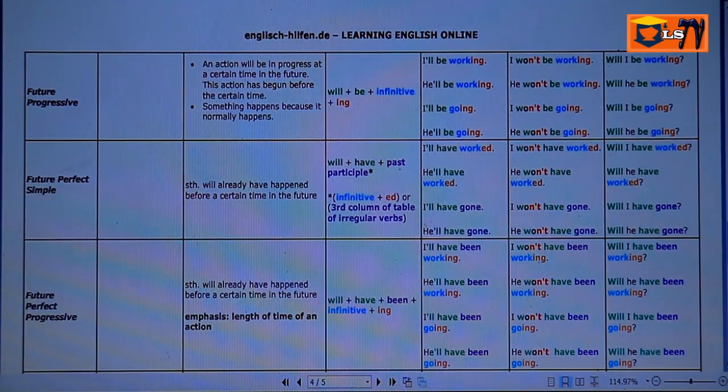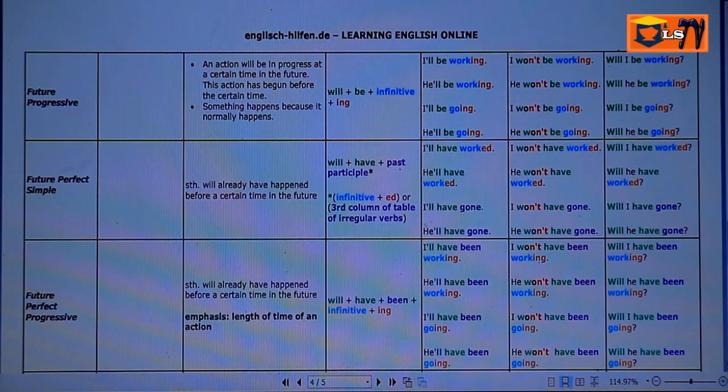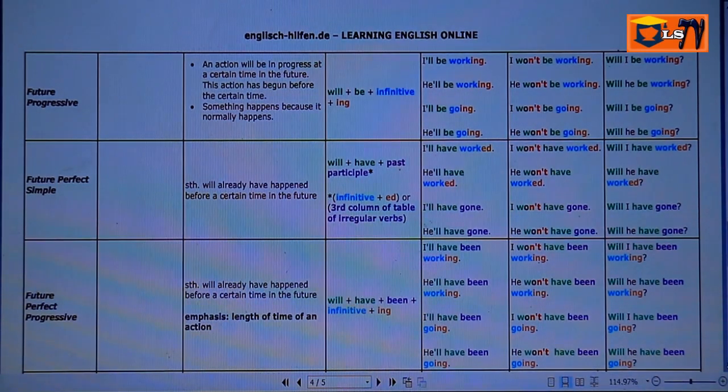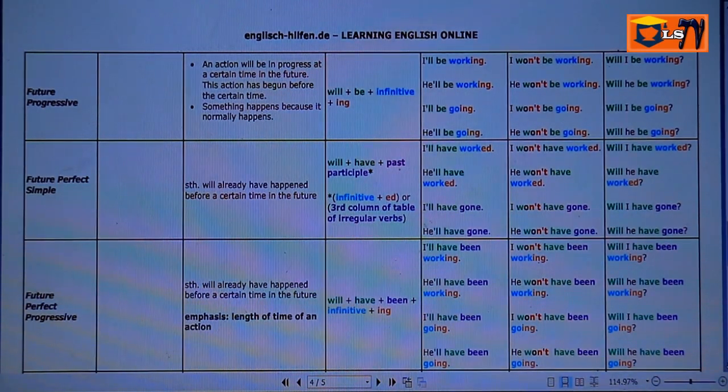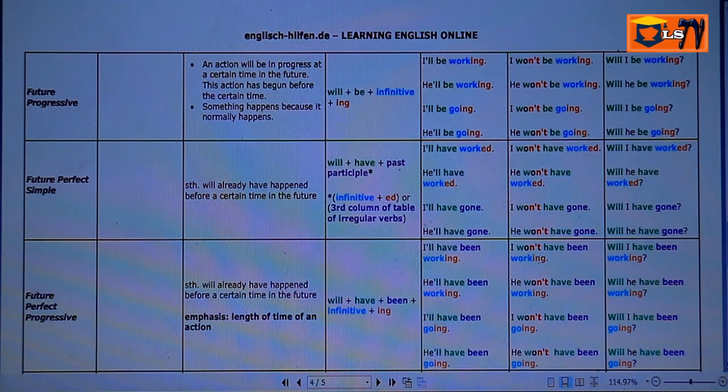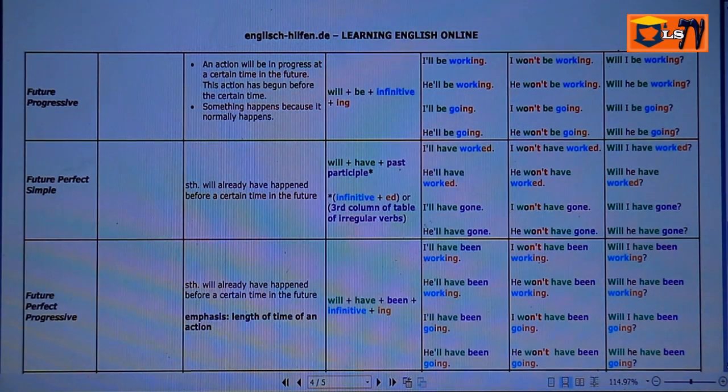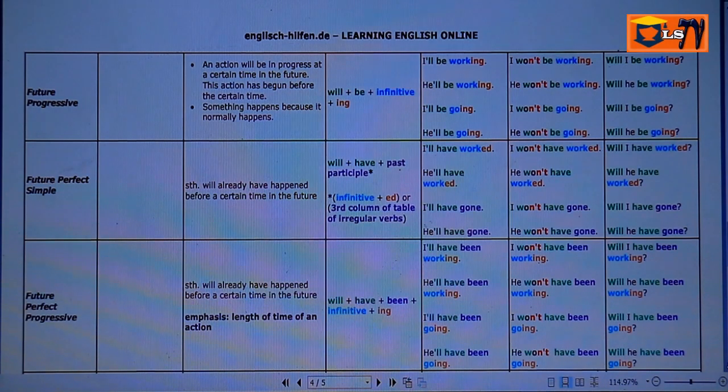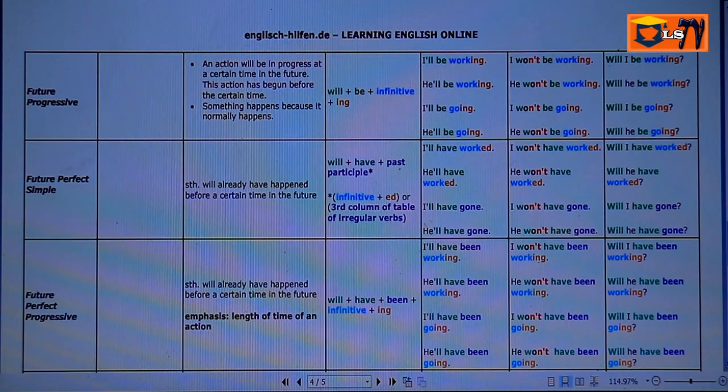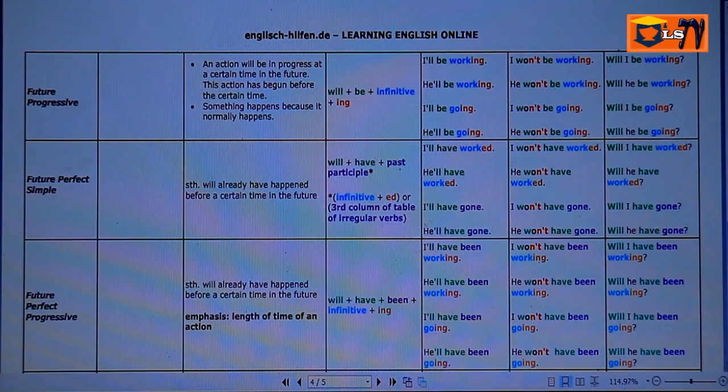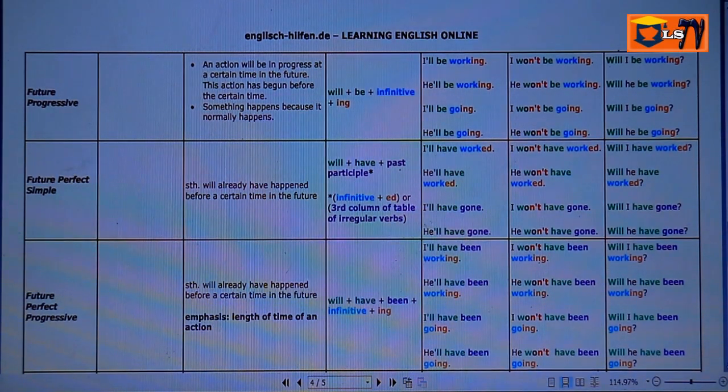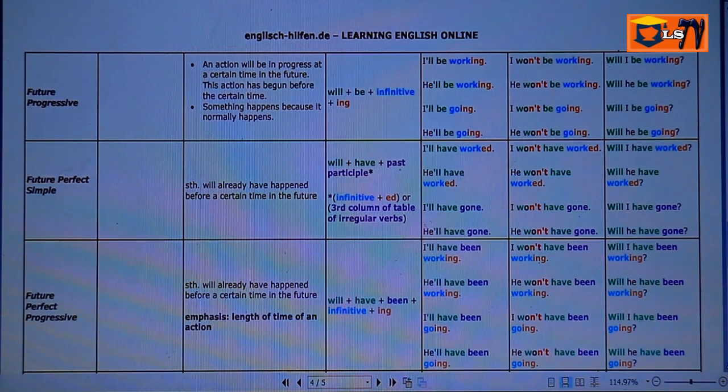The last is Future Perfect Progressive. The use here, something will have already happened before a certain time in the future. Emphasis here is the length of time of an action. The form: will have plus been plus infinitive plus ing. Here, when you say how long some action or activity will be in the future. That is Future Perfect Progressive.